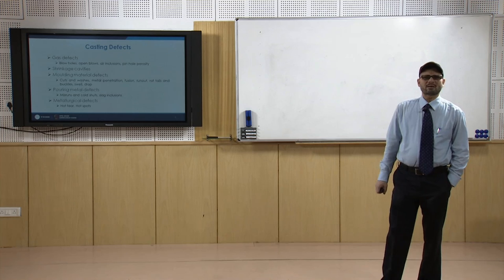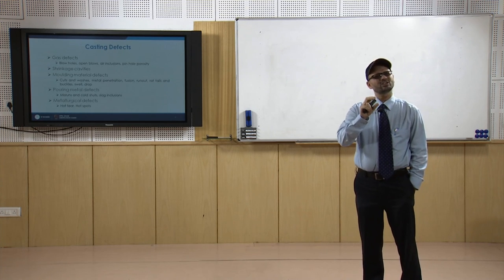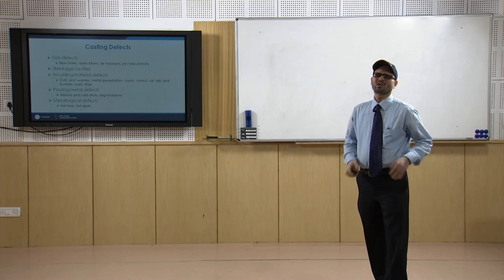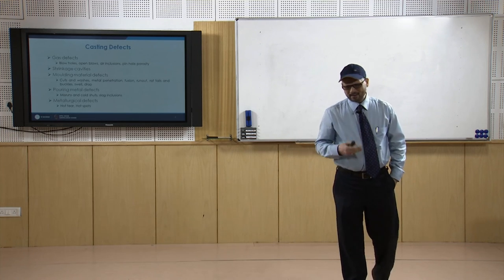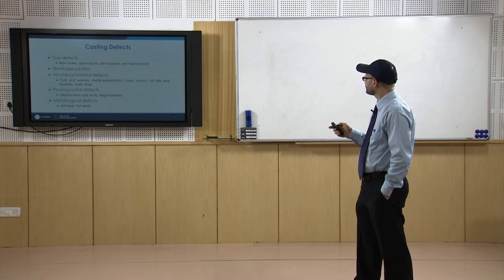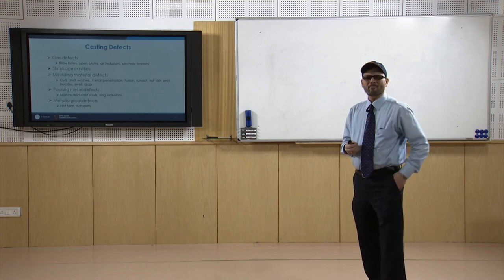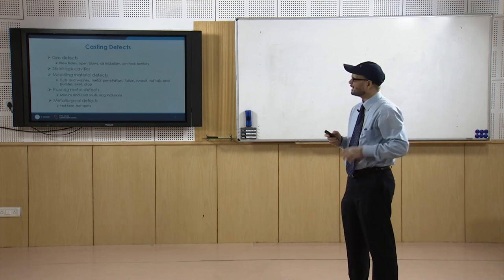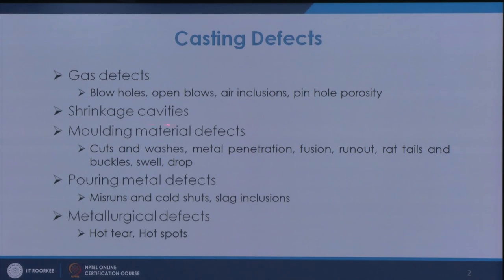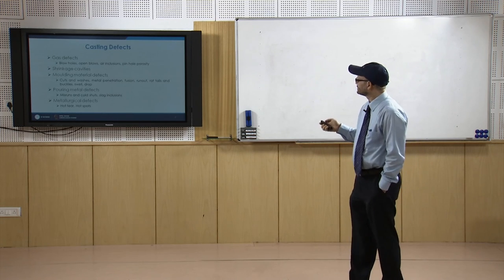Shrinkage cavities are basically the cavities formed because of shrinkage during the solidification process. As we know, when solidification takes place — the formation from liquid to solid — shrinkage occurs. The shrinkage amount is compensated by properly supplying adequate metal from the riser. If the riser is able to feed the required amount in areas where shrinkage is taking place, it is fine; but if not, shrinkage cavities are likely to occur.